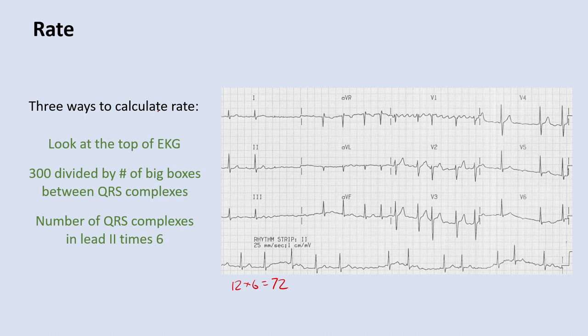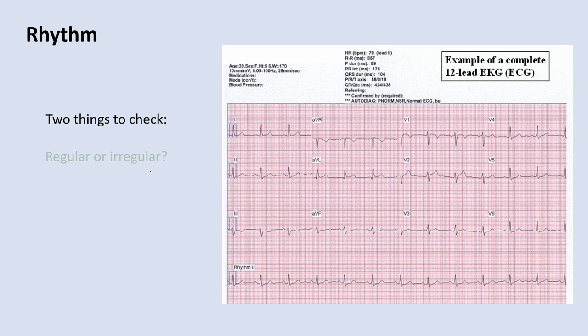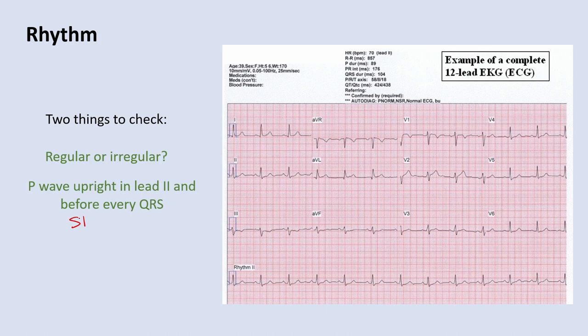Once you've finished calculating the rate, the next step is to look at the rhythm. You're looking at two things: first, is this a regular or an irregular rhythm? In this case, it's very regular — all of the QRS complexes are coming at the exact same time. The other important thing to mention every time is that you see an upright P wave in lead two, and there's a P before every QRS and a QRS after every P. This tells you the rhythm is most likely coming from the sinus node.